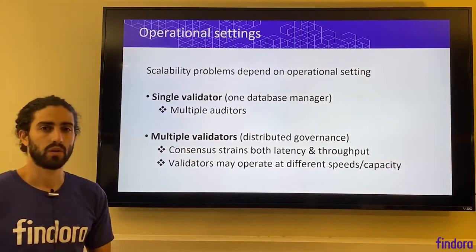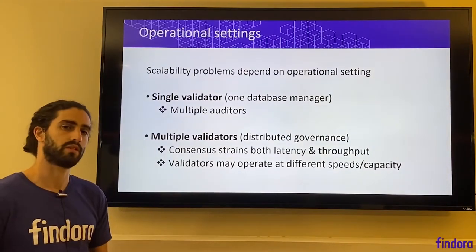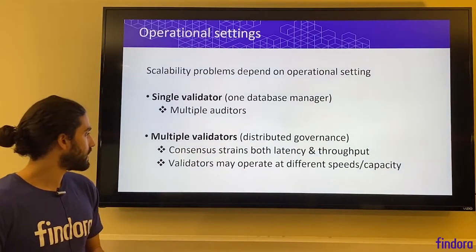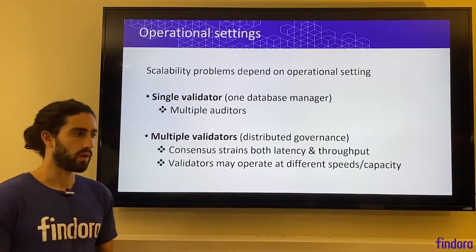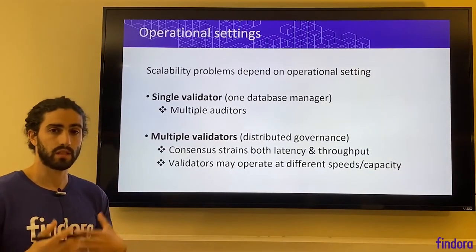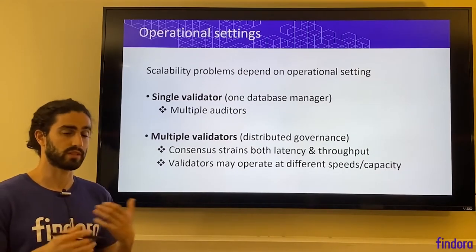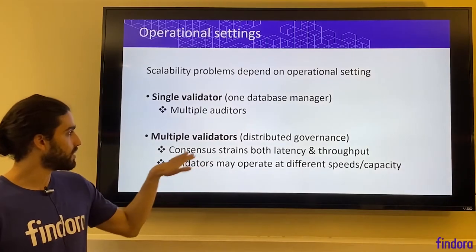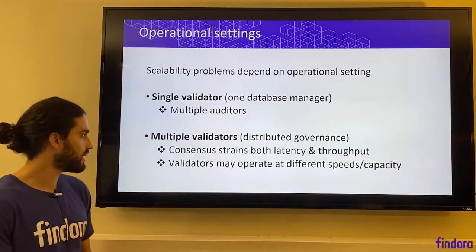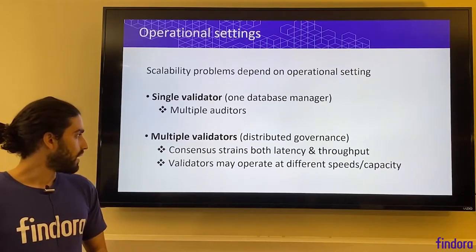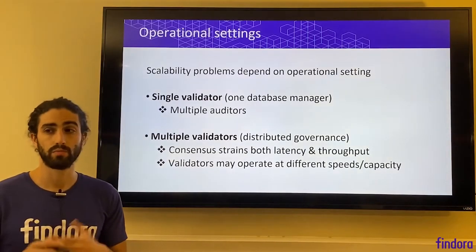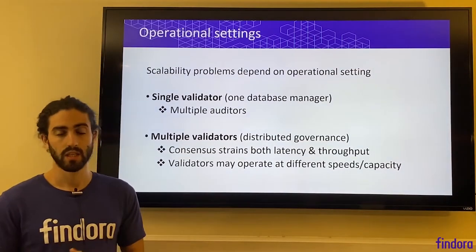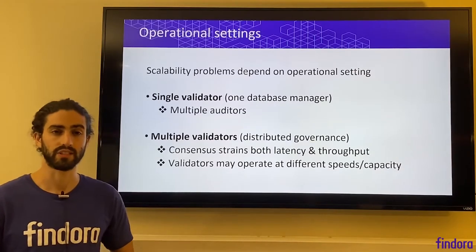In the single validator setting, there may be multiple auditors who are trying to keep up with the single validator and make sure that it is not committing bad or invalid transactions to the database. Then there's multiple validators, or a distributed governance model, where transactions are only fully processed and become officially part of the database once all the validators participating in the distributed governance have reached an agreement — this is called consensus. Consensus strains both the latency — the delay between when a transaction is submitted and when it's accepted — as well as the throughput, which is the number of transactions the database can get through per second.